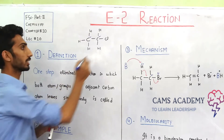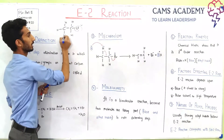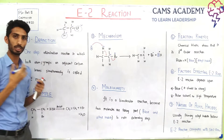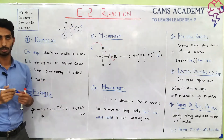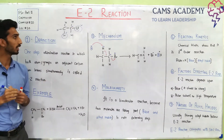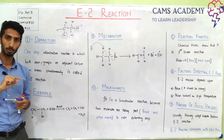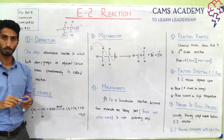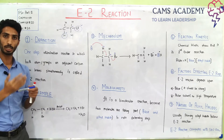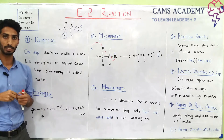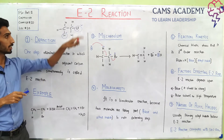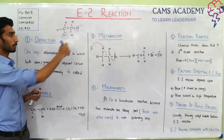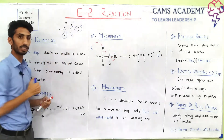One is the leaving group (halide), and the other one is hydrogen removed. Depending upon how the two groups are removed — either simultaneously or stepwise — on this basis we divide. In E1 reactions, the leaving group is removed first.